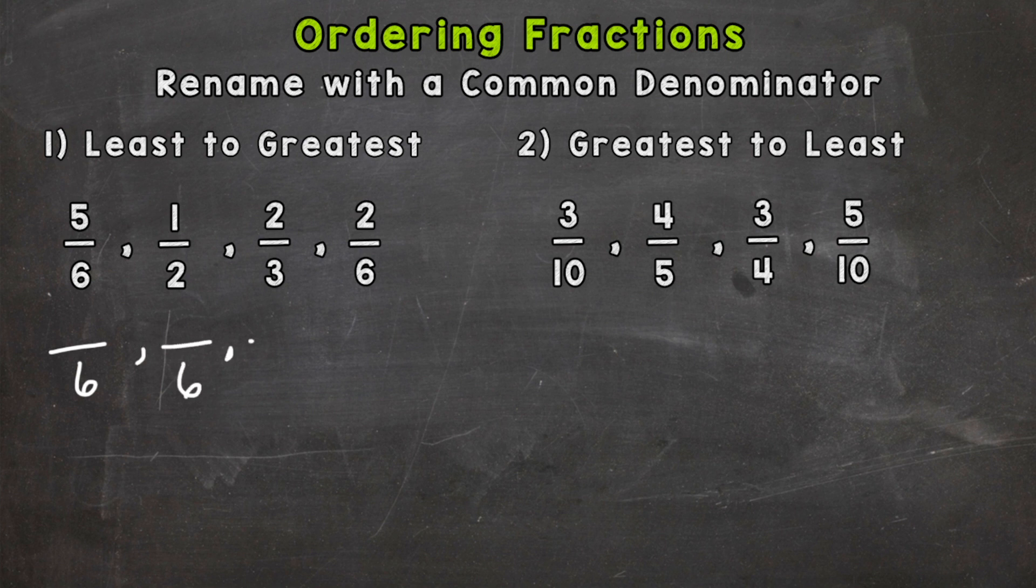And I'm just going to write everything underneath here. So 5 sixths is already out of 6. It already has a denominator of 6. So we do not need to do anything to that fraction.